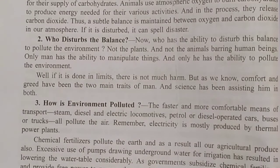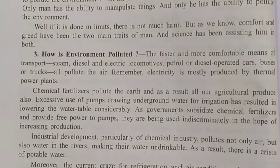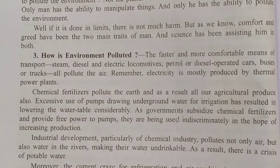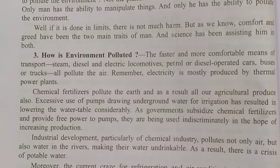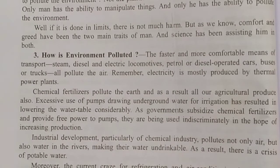Faster and more comfortable means of transport — steam, diesel, and electric locomotives, and petrol or diesel operated cars, buses, and trucks — pollute the air. Electricity is mostly produced by thermal power plants. Chemical fertilizers pollute the earth and, as a result, all our agricultural products as well. Excessive use of pumps drawing underground water for irrigation has resulted in lowering the water table considerably.